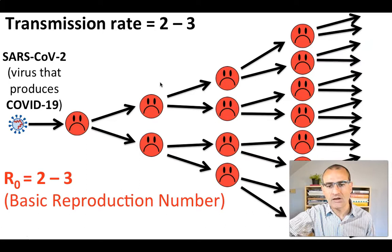This can explain why in a matter of a few weeks you go from a handful of infected people to thousands upon thousands of infected people, because it follows a pattern of exponential spread of the disease.